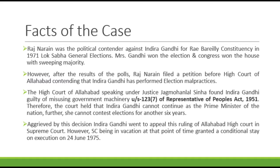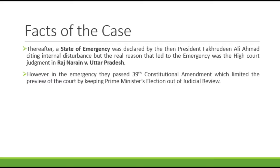Aggrieved by the decision, Indira Gandhi went to appeal this ruling of the Allahabad High Court in the Supreme Court. However, the Supreme Court, being in vacation at that point of time, granted a conditional stay on execution on 24 June 1975. Thereafter, a state of emergency was declared by President Fakhruddin Ali Ahmed, citing internal disturbance, but the real reason that led to the emergency was the High Court judgment in Raj Narayan versus Uttar Pradesh. However, in the emergency, they passed the 39th Constitutional Amendment, which limited the purview of the court by keeping the Prime Minister's election out of judicial review.